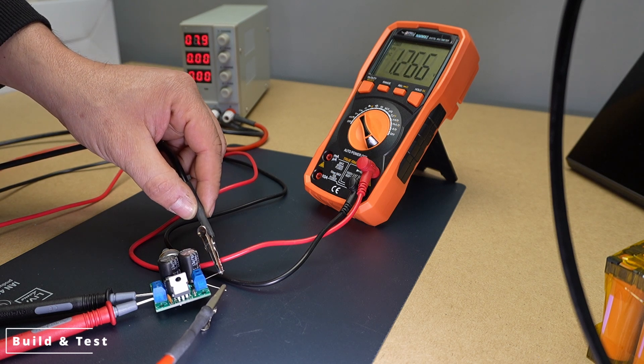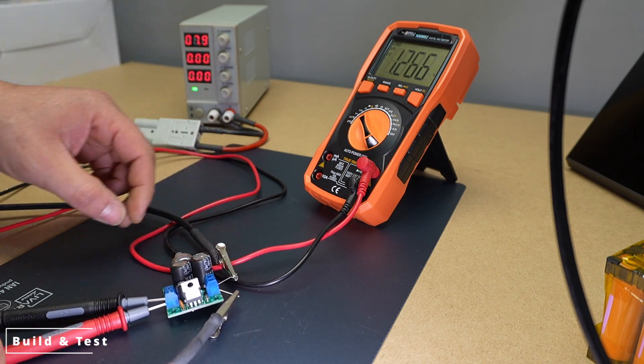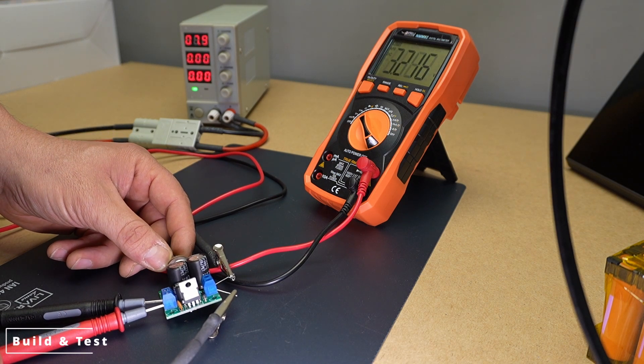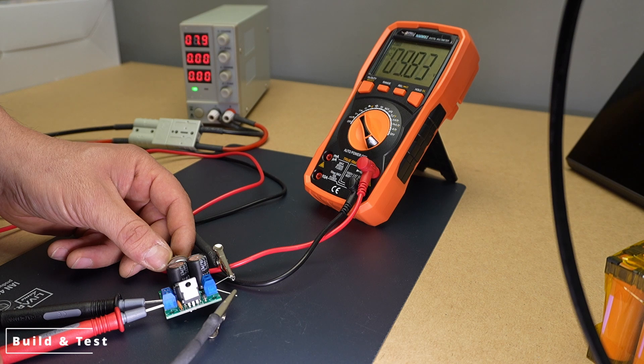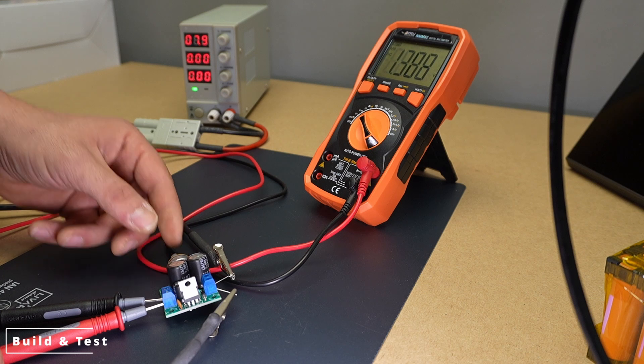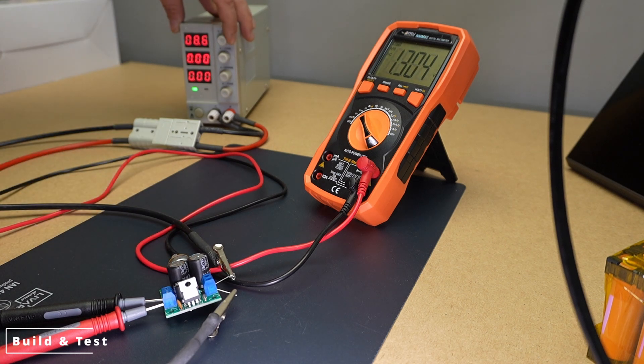Connecting the multimeter. I'll connect the multimeter to the output terminals to measure the voltage provided by the power supply. Set the multimeter to measure direct current, DC voltage, and ensure the measurement range is appropriate, such as 30 volts.